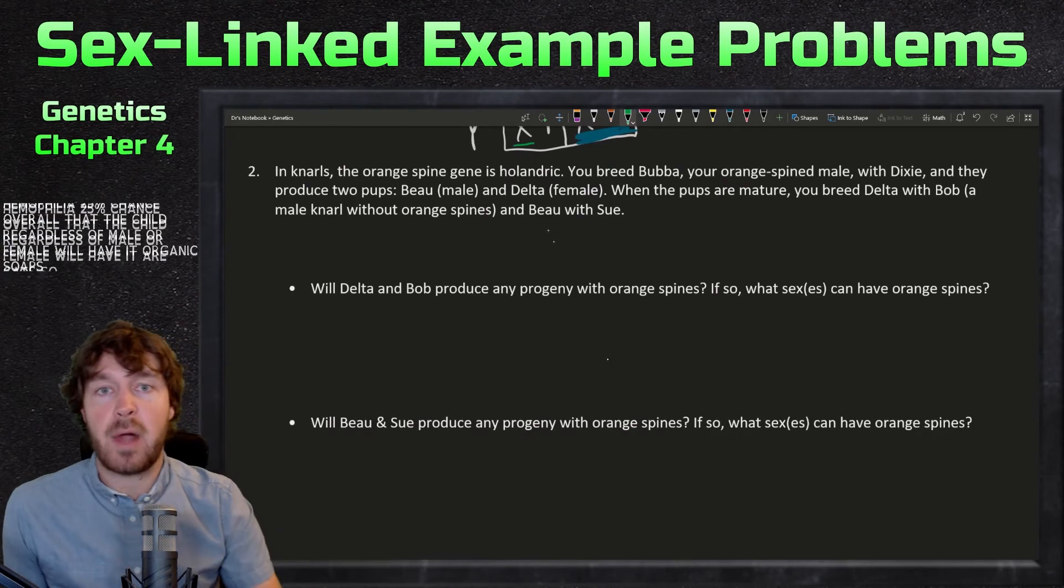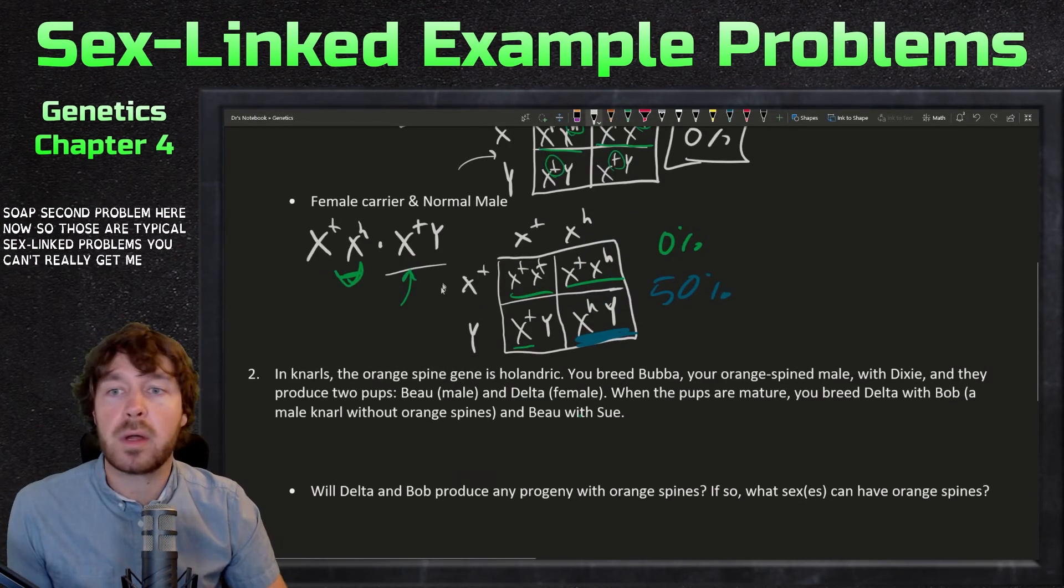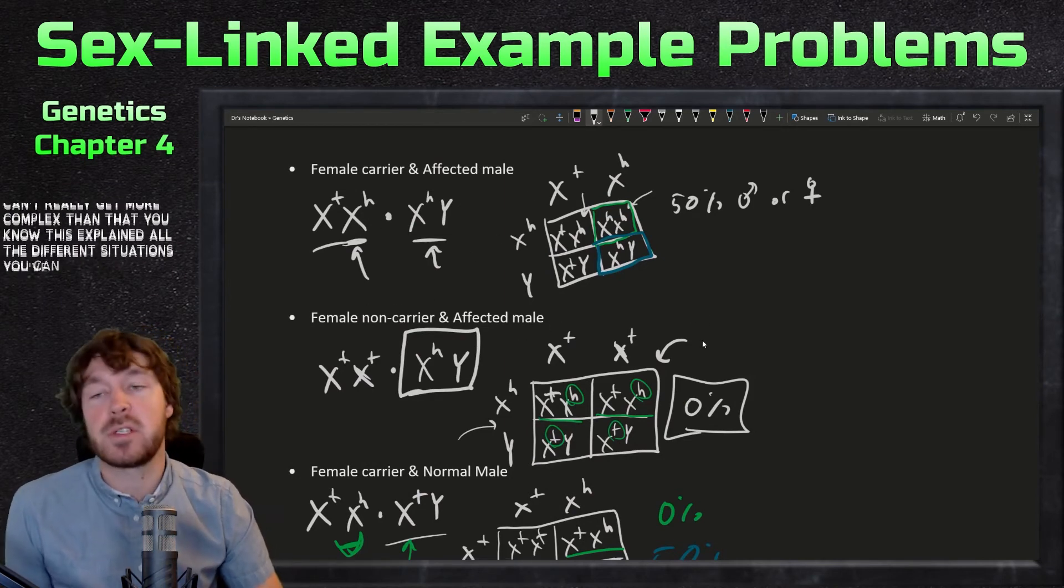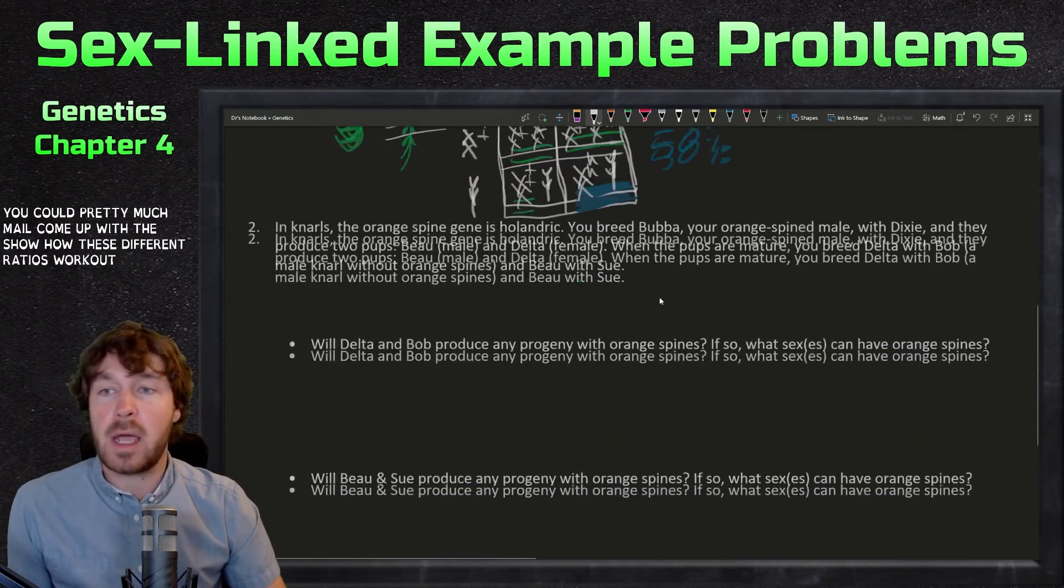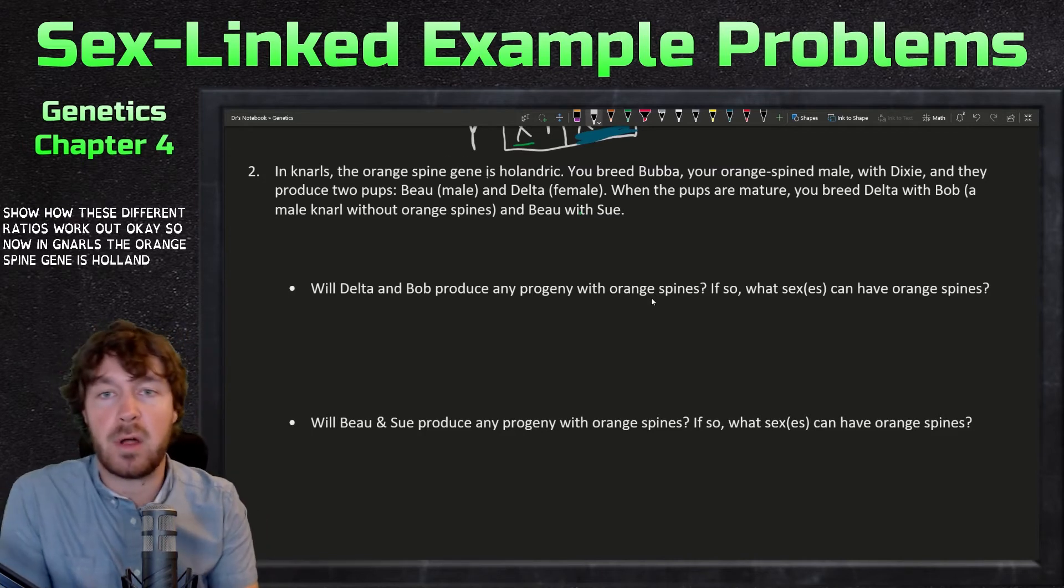Second problem here now. Those are typical sex-linked problems; you can't really get more complex than that. This explained all the different situations you could come up with to show how these different ratios work out.